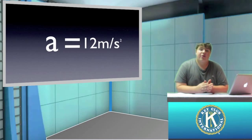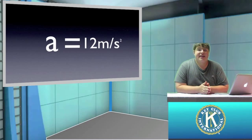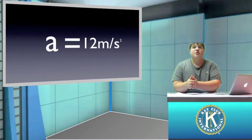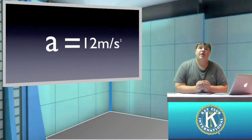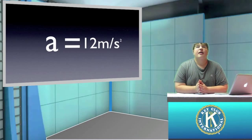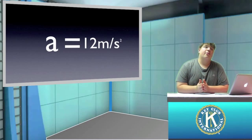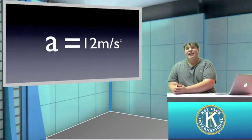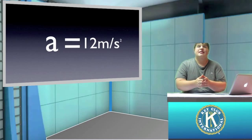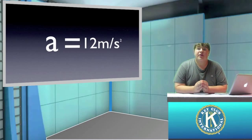Now let's say we have our dragster at 0 again and let it accelerate for 2 seconds. At the end of 2 seconds, the dragster would be moving 24 meters per second. Now let's say we take the dragster back to 0 and let it accelerate for 3 seconds. At the end of 3 seconds, that dragster would be moving 32 meters per second.